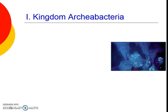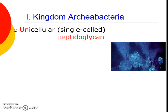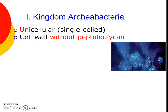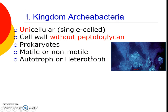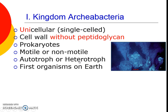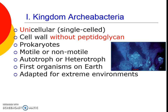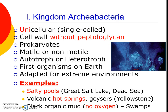The domain and kingdom for archaebacteria has the following characteristics. It's unicellular, single-celled. They're prokaryotes — they don't have nuclei. They have a cell wall but it doesn't have a specific molecule in it. They are motile or non-motile. Some of them are autotrophs making their own food, some are heterotrophs that have to feed on other things. They're thought to be the oldest, first organisms on the planet, adapted for extreme environments — they can live in very salty areas, hot volcanoes, or areas with no oxygen.